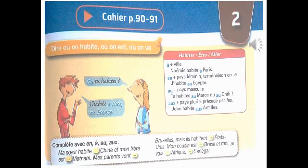Complète avec à, au ou aux. Ma sœur habite en Chine et mon frère est au Vietnam. Mes parents vont à Bruxelles, mais ils habitent aux États-Unis. Mon cousin est au Brésil et moi, je vais en Afrique, au Sénégal.